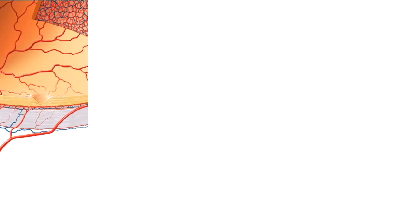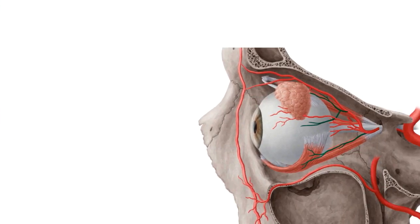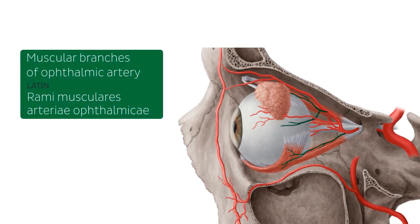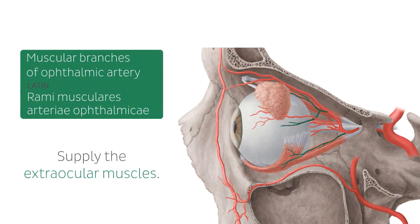The ophthalmic artery also gives off numerous muscular branches, which, as their name suggests, supply the extraocular muscles.